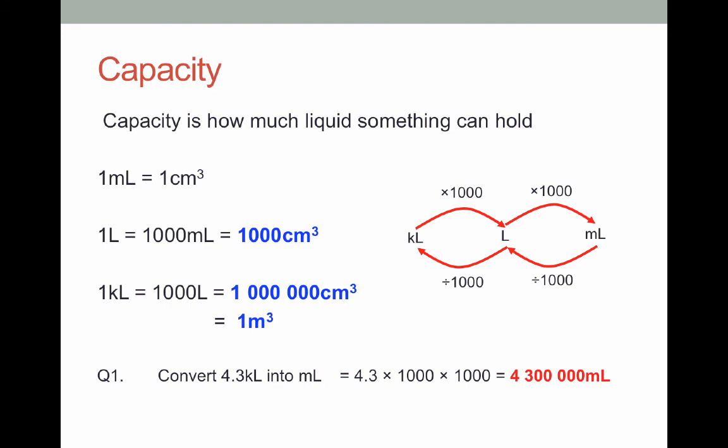Now kiloliters is the type of capacity that would hold swimming pools. Liters we're looking at milk bottles or bottles of coke. Milliliters you are looking at cans of drink. They're the common conversions and common uses in real life.